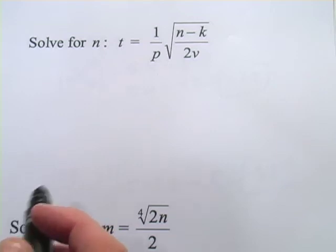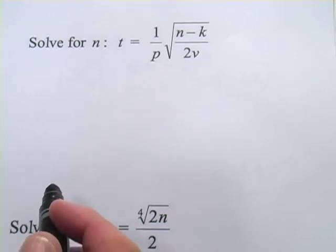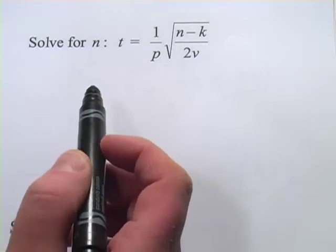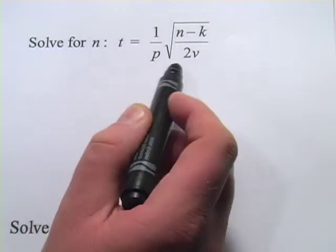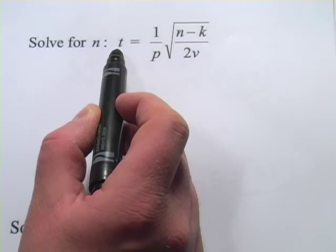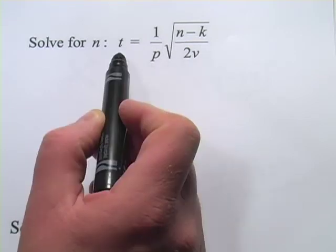In these problems, we have some equations with lots of different variables, and we're being asked to solve for one particular variable. You notice in this first one, it's already solved for t. t is on the left here, everything else is on the right, on the other side of the equal sign.